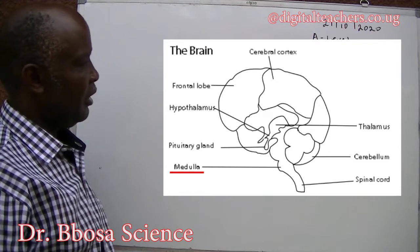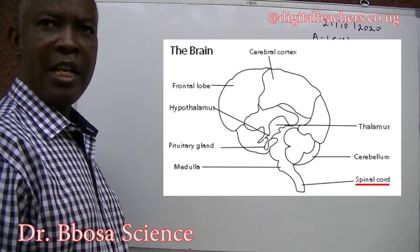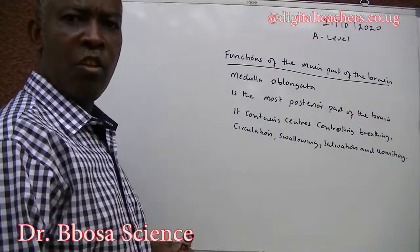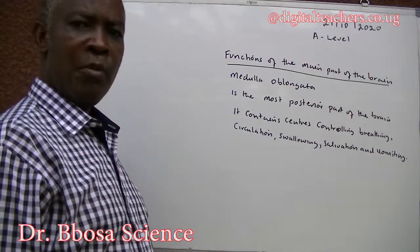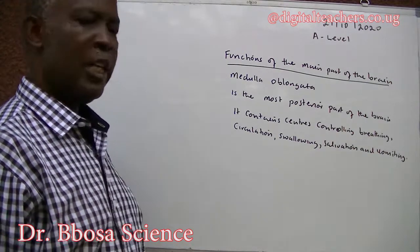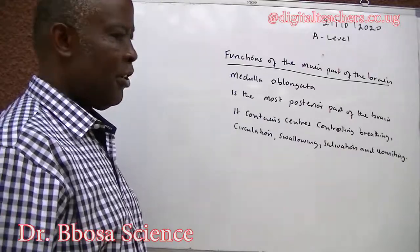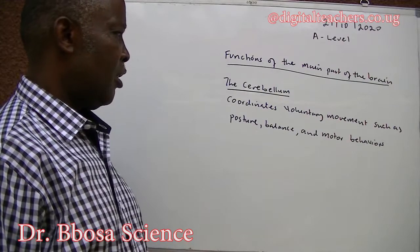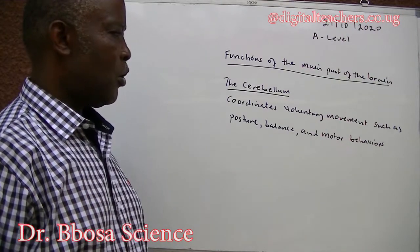The medulla oblongata, or spinal cord connection, is the most posterior part of the brain. It contains centers controlling breathing, heart rate, swallowing, salivation, and vomiting. The cerebellum coordinates voluntary movements such as posture, balance, and motor behaviours.